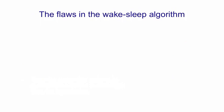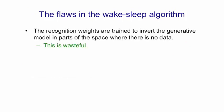There are flaws in this algorithm. The first flaw is a rather minor one, which is the recognition weights are learning to invert the generative model. But at the beginning of learning, they're learning to invert the generative model in parts of the space where there isn't any data. Because when you generate from the model, you're generating stuff that looks very different from the real data because the weights aren't any good. That's a waste, but it's not a big problem.